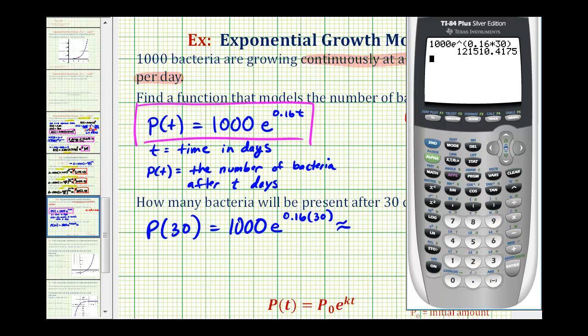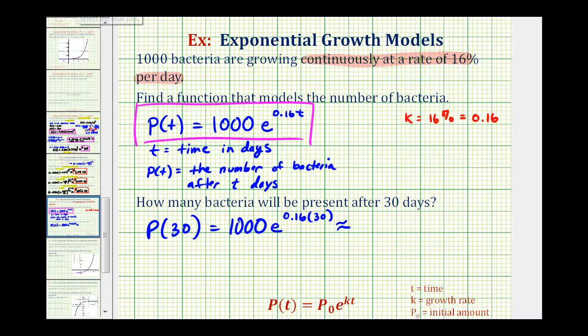So the number of bacteria will be approximately 121,510 after 30 days.